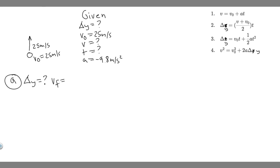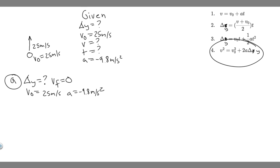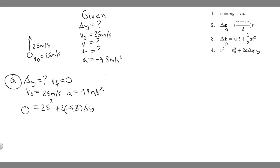So we know V final equals zero in this problem. V sub 0 is 25 meters per second and A is minus 9.8. The equation that stands out is v² = v₀² + 2aΔy, because we have V, V sub 0, and A. So 0 squared equals 25 squared plus 2 times minus 9.8 times delta Y. That's 0 equals 625 plus 2 times minus 9.8 times delta Y.